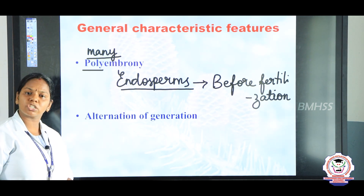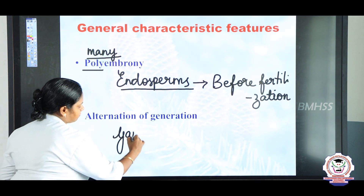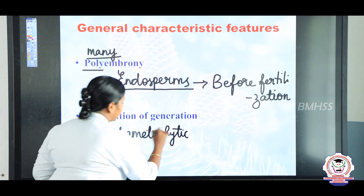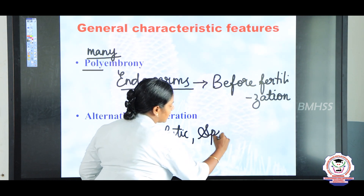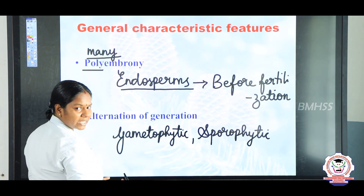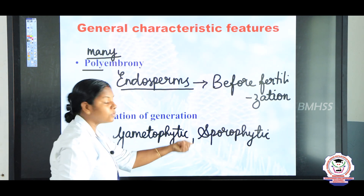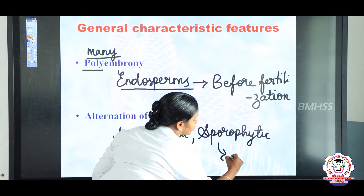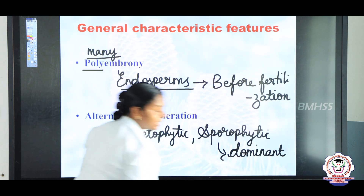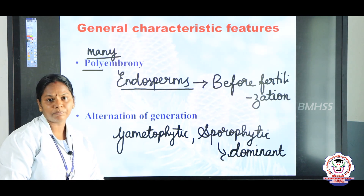Gymnosperms show alternation of generation — undergoing two types: one is a gametophytic phase and the other is a sporophytic phase. Gymnosperms are haplodiplontic. The sporophyte phase is dominant in the life cycle, and the gametophyte is responsible only for producing the gametes.